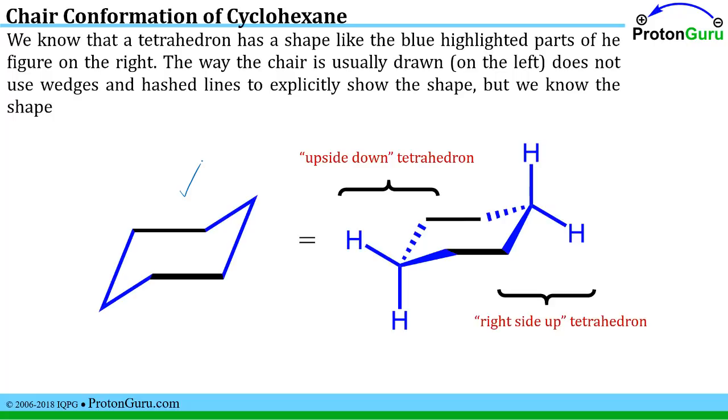So if we have this structure where we have taken a hexagon, tilted it over, and then tipped the point up and the point down, we still have to figure out how these different carbons look.